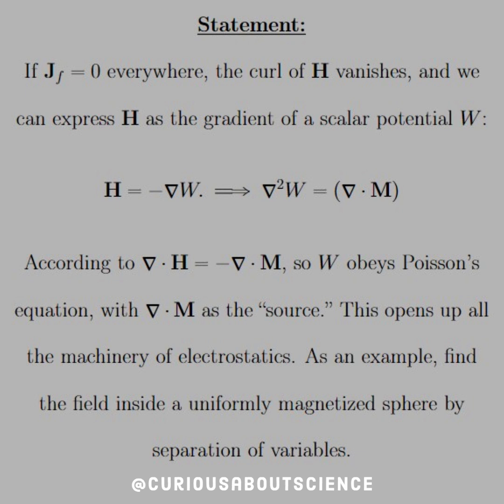And so we see that H equal to negative gradient W, therefore gradient squared W is equal to the divergence of M. That's simply an equivalence relation there.